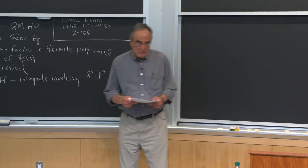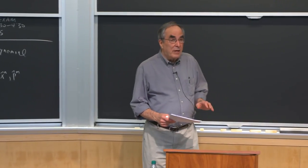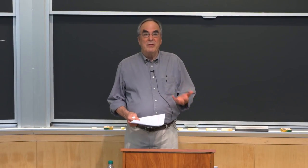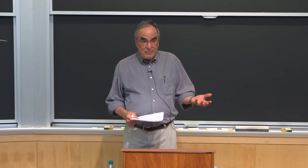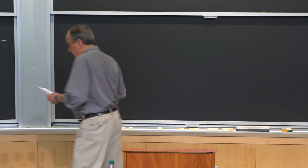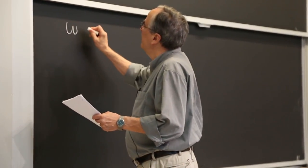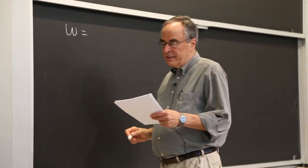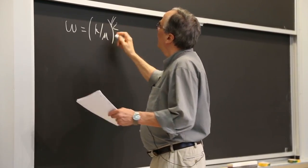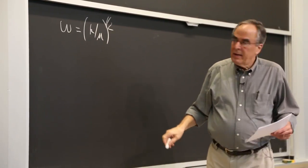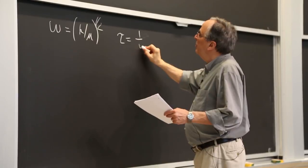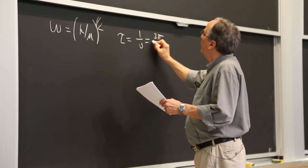Last time, we treated the harmonic oscillator classically. We derived the equation of motion from force equals mass times acceleration, and we solved it. We saw that we have this quantity omega, which I initially introduced as a constant combining the force constant and the mass. The period of oscillation is 1 over the frequency, which is 2π over omega.